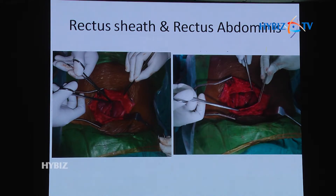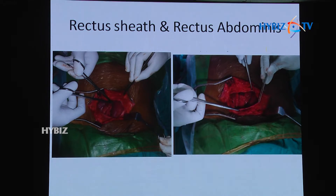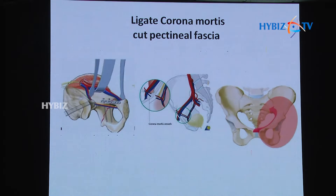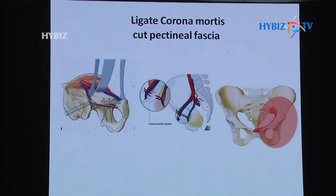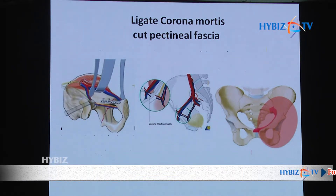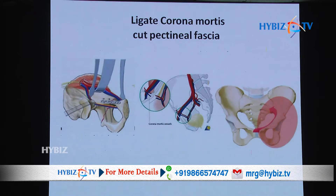The linea alba is incised or finger-dissected, and the rectus abdominis muscles are separated. The complete attachment of the rectus abdominis over the pubic tubercle region should not be detached. In cases of pubic diastasis, the pyramidalis muscle and part of the rectus abdominis are often already torn from the pubic symphysis. Once deep to the rectus abdominis, the urinary bladder is visualized, and the first retractor is placed posterior to the anterior neurovascular bundle.